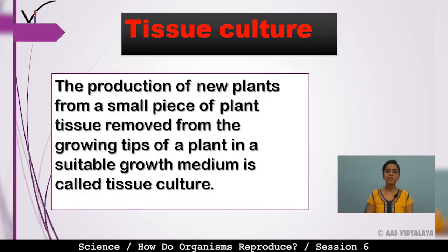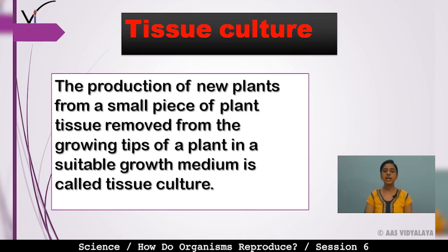The production of new plants from a small piece of plant tissue removed from the growing tips of the plant in a suitable growth medium is called Tissue Culture. We remove tissues present in the old plant and use them for new plant production. This is called tissue culture.